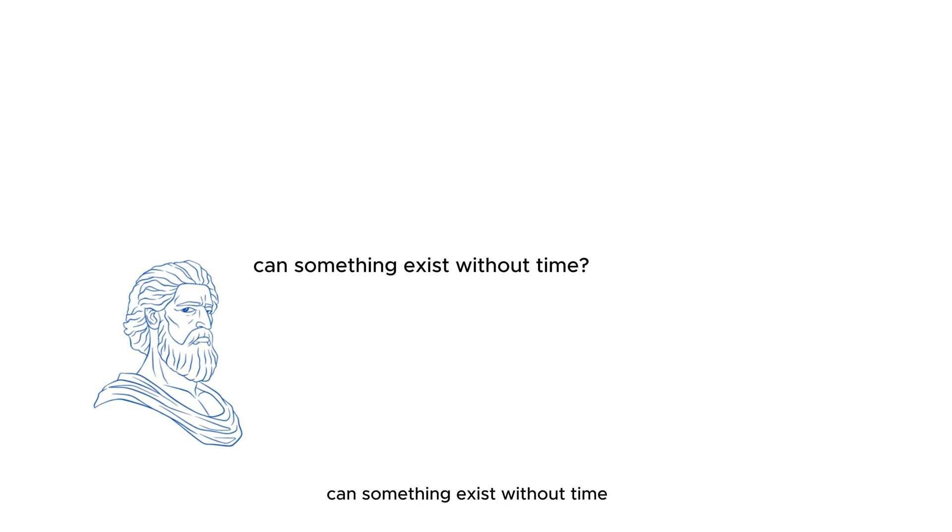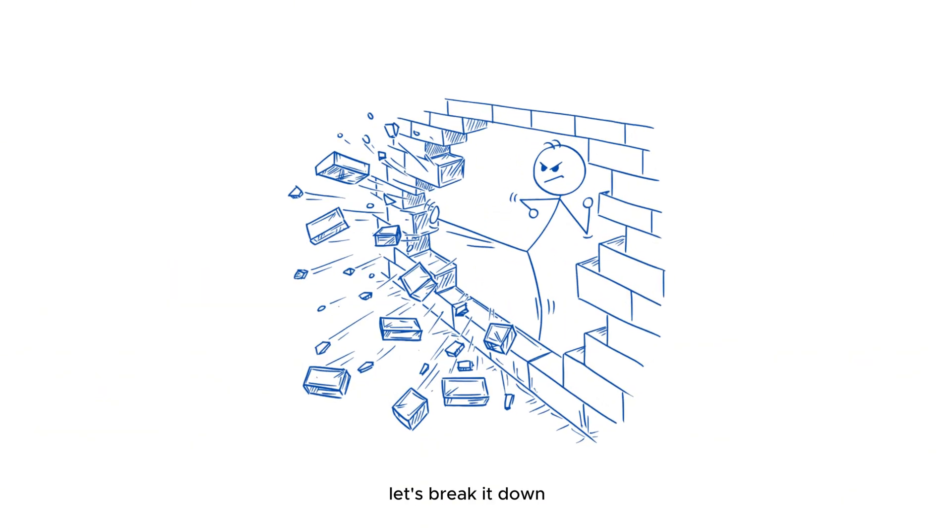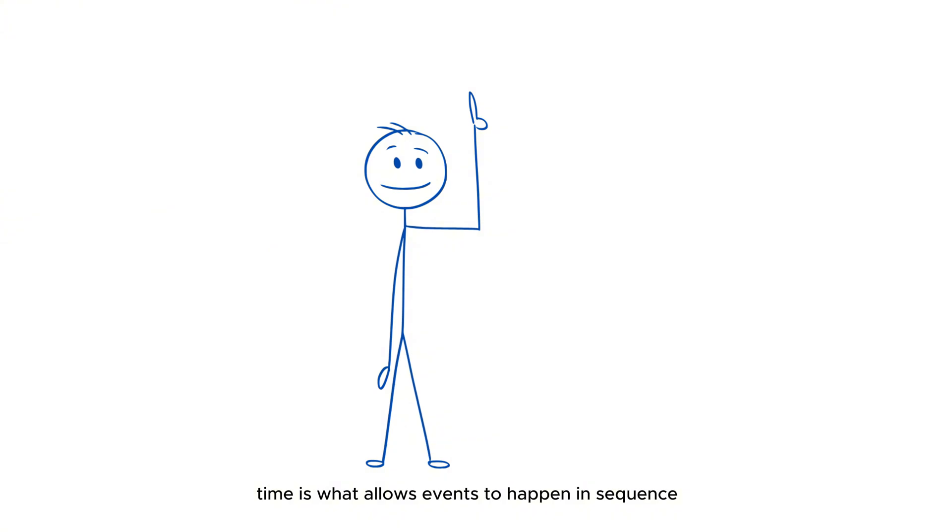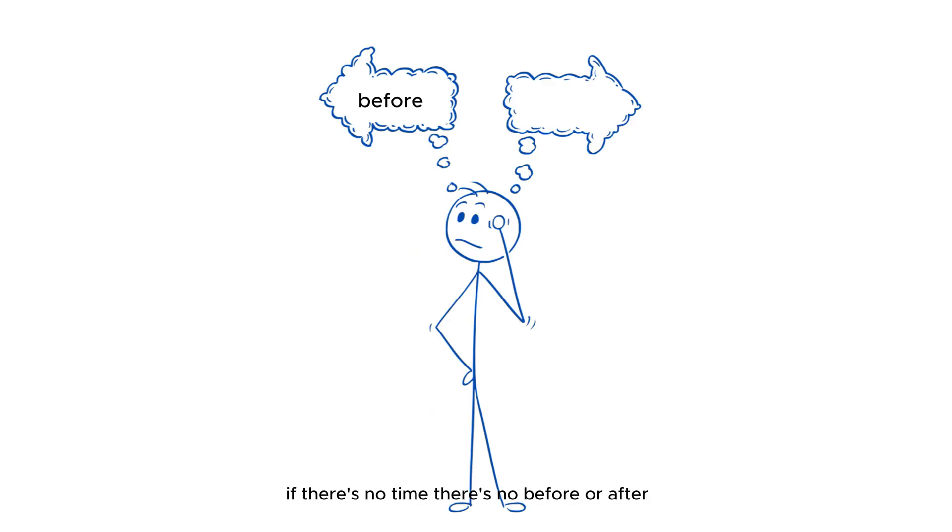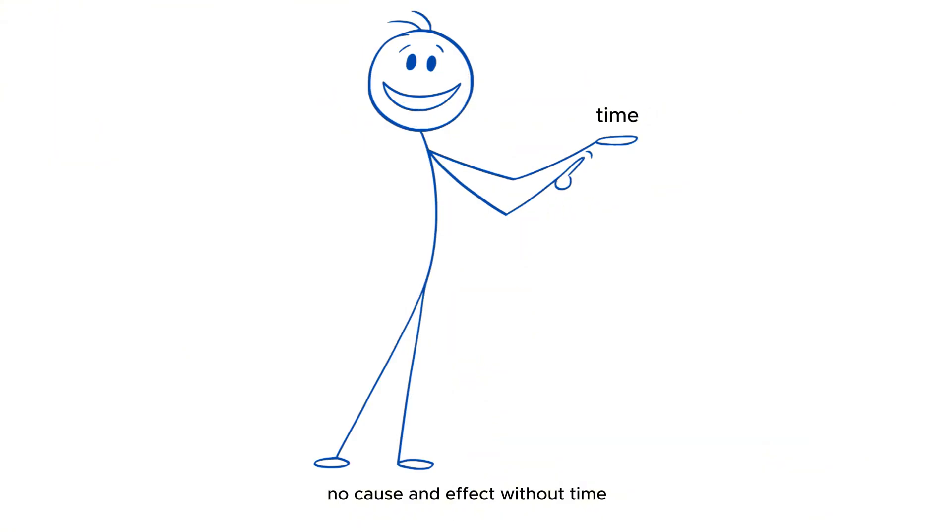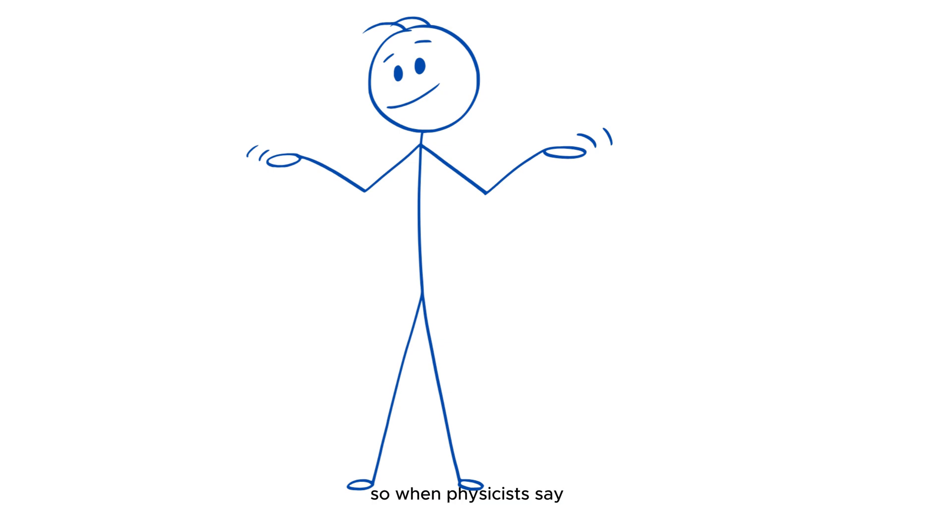Can something exist without time? Let's break it down. Time is what allows events to happen in sequence. First this, then that. If there's no time, there's no before or after, no cause and effect. Without time, the concept of before becomes meaningless.